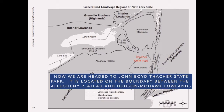Now we're going to leave the beautiful Adirondacks and head to another fascinating place in New York, but further south. We're going to head to John Boyd Thatcher State Park. It's located on the boundary between the Allegheny Plateau and the Hudson Mohawk Lowlands, and that's the approximate spot of Thatcher State Park.